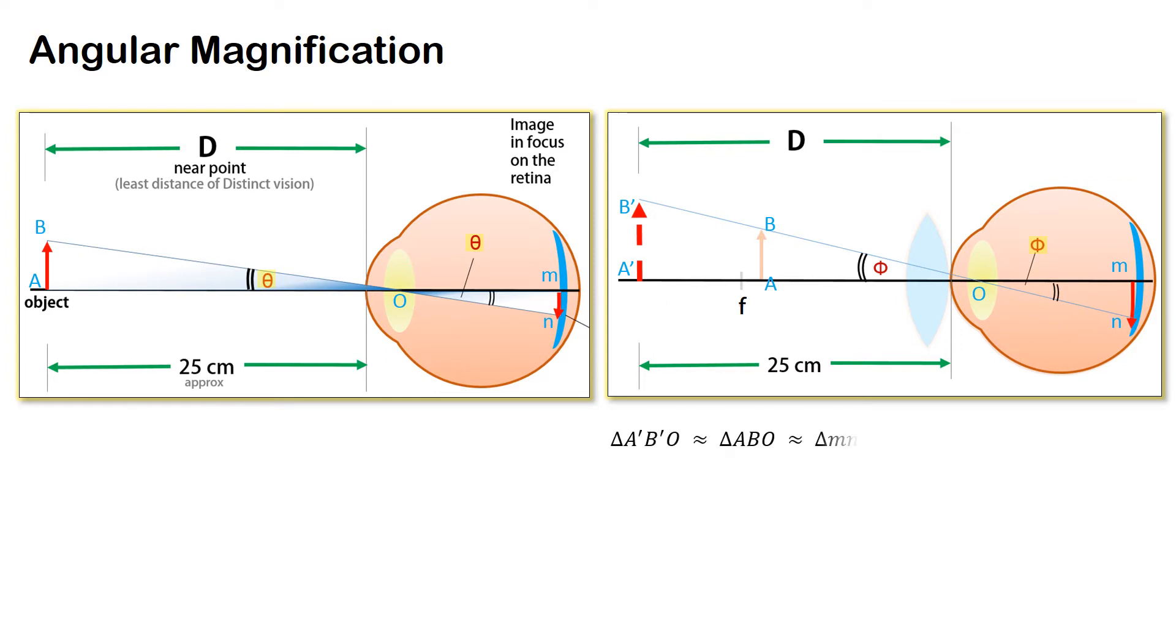Now these three triangles are similar and therefore by principle of similarity we can say that ab by ao is equal to a dash b dash by a dash o, and a dash o is d.